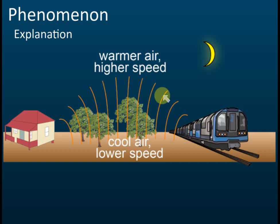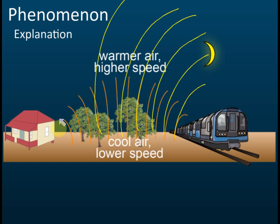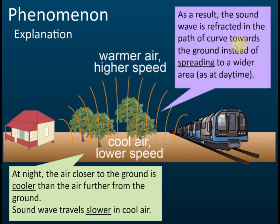When the wave is refracted, it converges towards the ground. So if you are standing near the railway, you hear a louder sound at night. During the day, the wave spreads to a wider area so the amplitude reaching you is very low. At night, due to refraction, the wave converges and you hear a very loud sound. In summary, at night the air closer to the ground is cooler than air further from the ground, so the sound wave travels slower near the ground, is refracted, and converges towards observers.